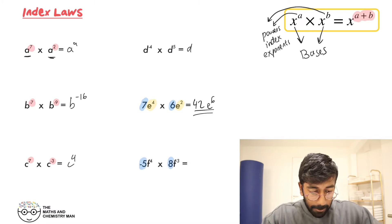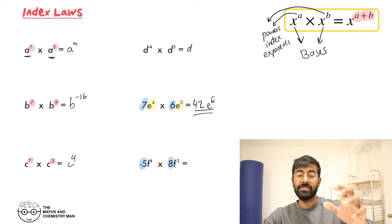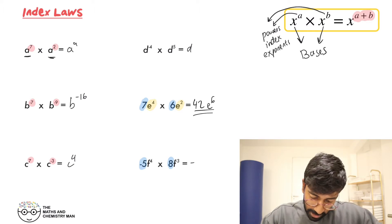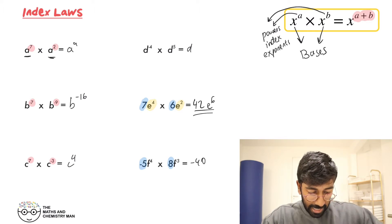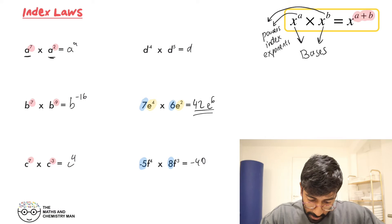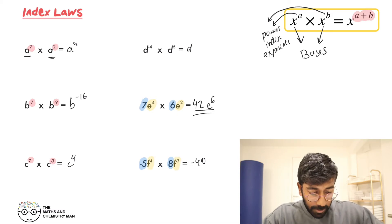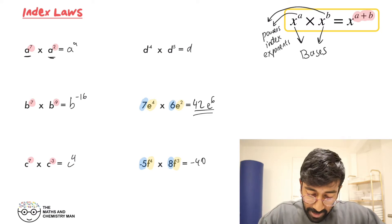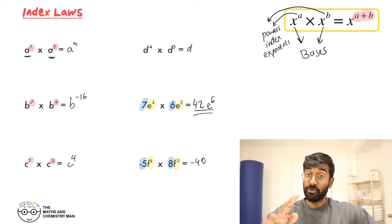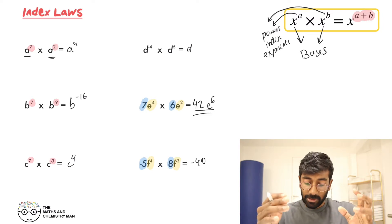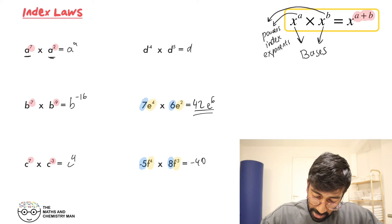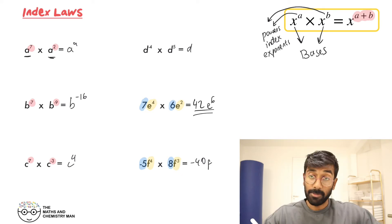Minus 5 times 8 is minus 40. And then the powers: F to the power of 4 times F to the power of minus 3. Add those together — that gives F to the power of 1, so we can leave it as just F.